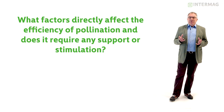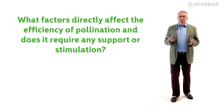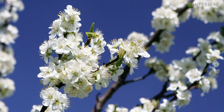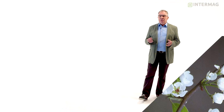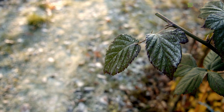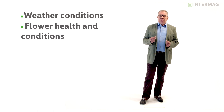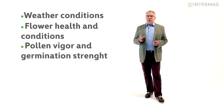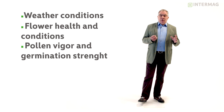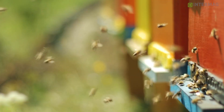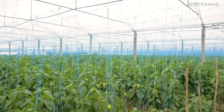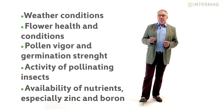What factors directly affect the efficiency of pollination, and do we have any tools or possibilities to support or stimulate this process? Definitely yes, but pollination effectiveness depends on several factors. First of all, weather conditions — when it's wet and cold, the pollination process is not that efficient. Flower health and condition is also an important issue, as is pollen vigor and germination — the strength of the pollen. Activity of pollinating insects is a big problem also on a global scale. And finally, availability of nutrients, especially zinc and boron, which are directly responsible for the efficiency of the pollination process.